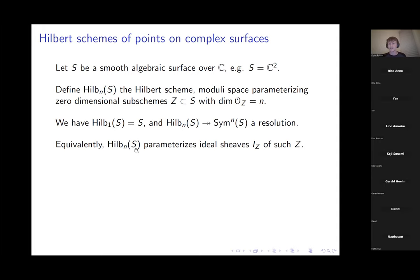These are fairly natural spaces, and it's tautologically true that we can think of Hilb_n as parametrizing the ideal sheaf of such zero-dimensional subschemes. Then n would be the co-dimension of the ideal sheaf rather than the dimension of the structure sheaf. From the perspective that we'd like to think of Hilb_n as the simplest example of a moduli space of sheaves, it's nice to characterize which sheaves are actually ideal sheaves.